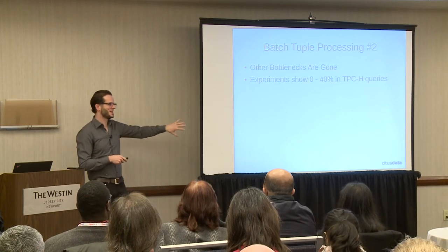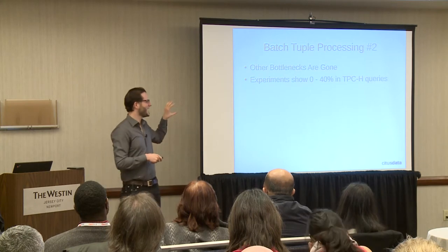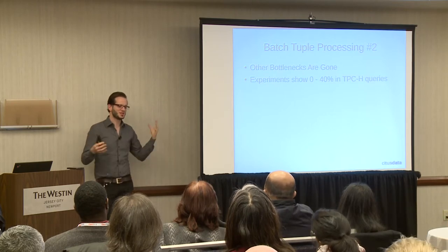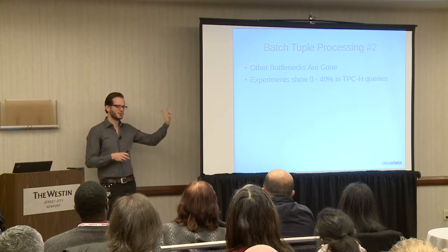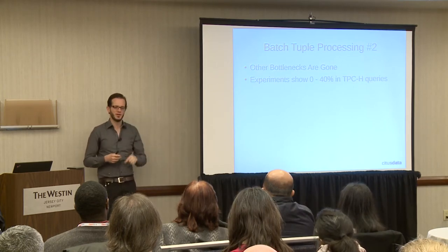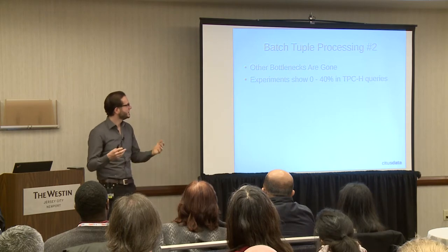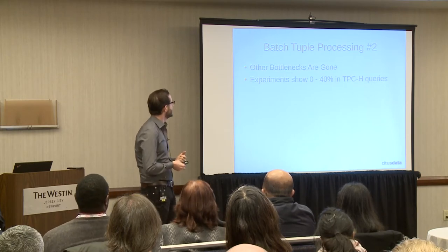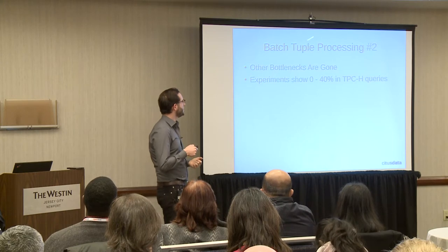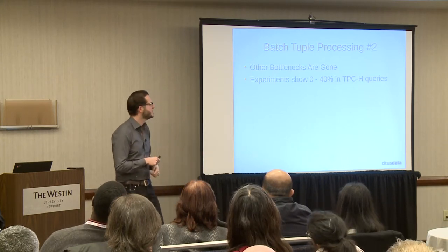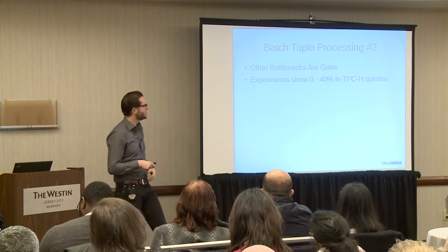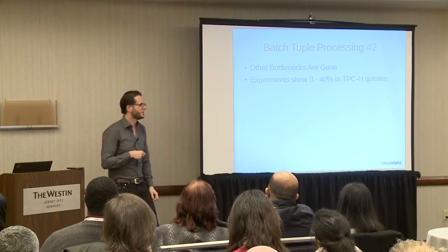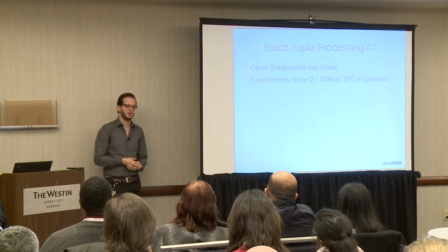After all these optimizations, we can actually go back to what I originally started with: batch tuple processing. After all these other optimizations are done, my initial guess about where the overhead was turns out to be correct. Applying my early batch tuple prototype on top of all these changes, some queries get 0% improvement — because they're still not bottlenecked there — but others get another 40% improvement on top of everything else. There's a lot of optimization potential still.